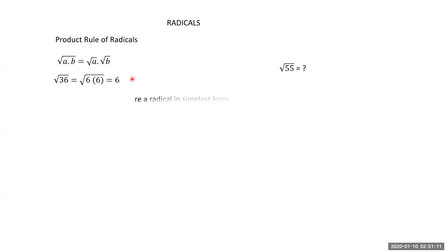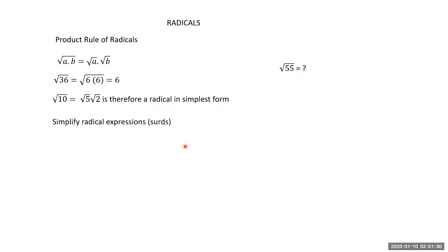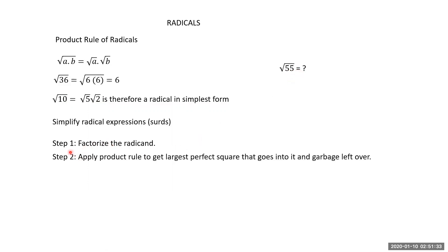For root of 36: 36 is a perfect square, 6 × 6, so there's no leftover and the answer is simply 6. Root of 10 is already in simplest form because root 5 and root 2 are non-factorable. Root of 25 is also in simplest form.